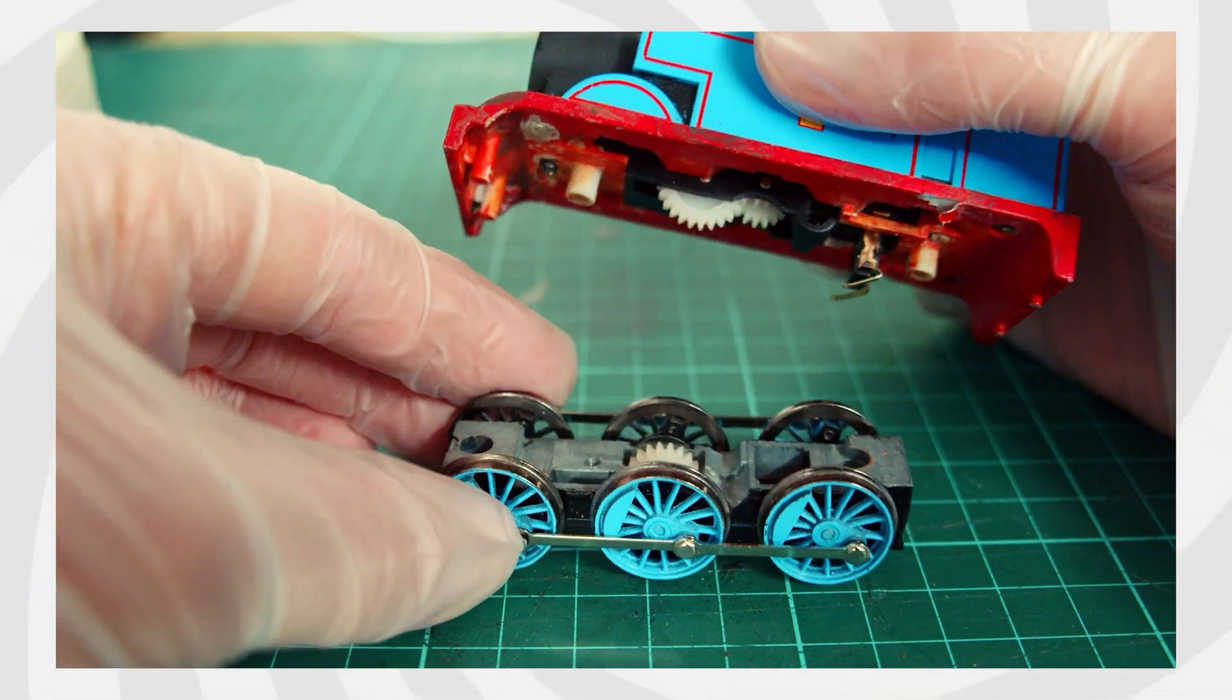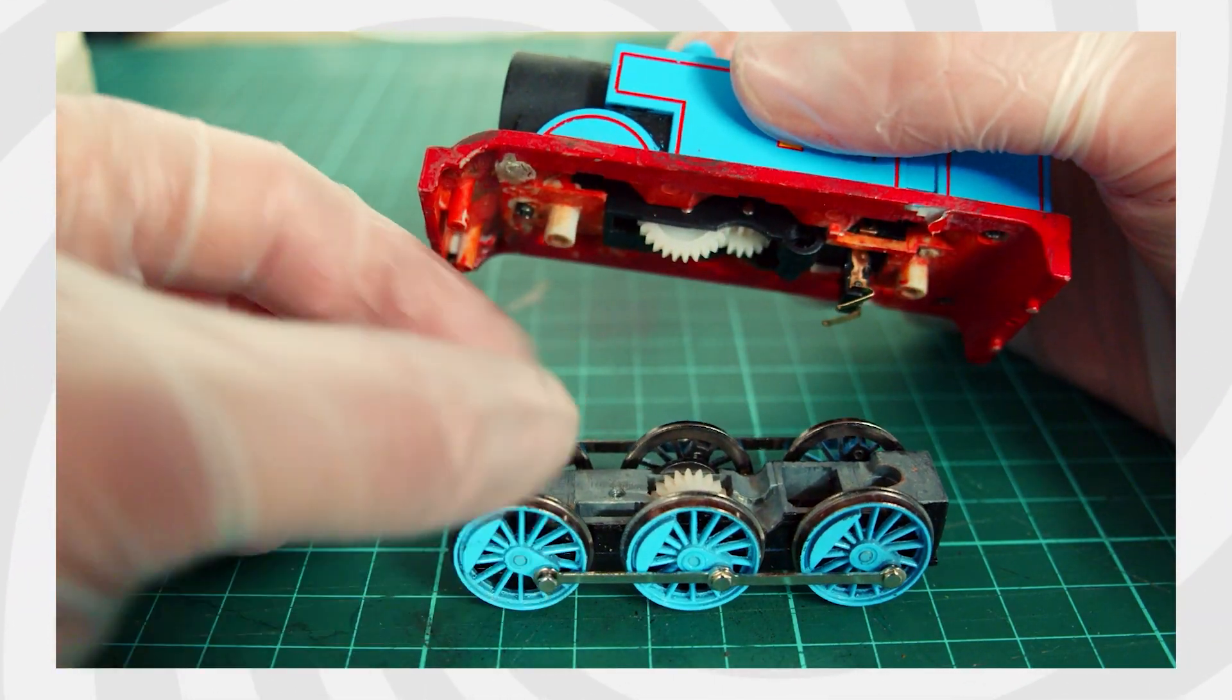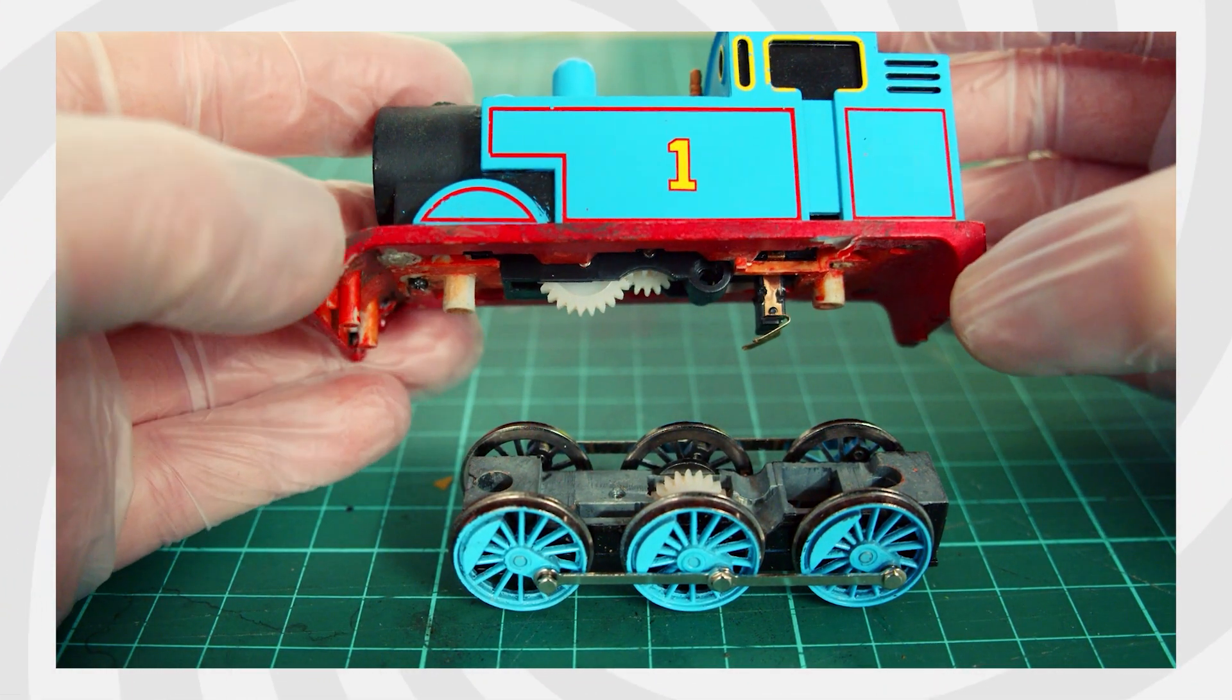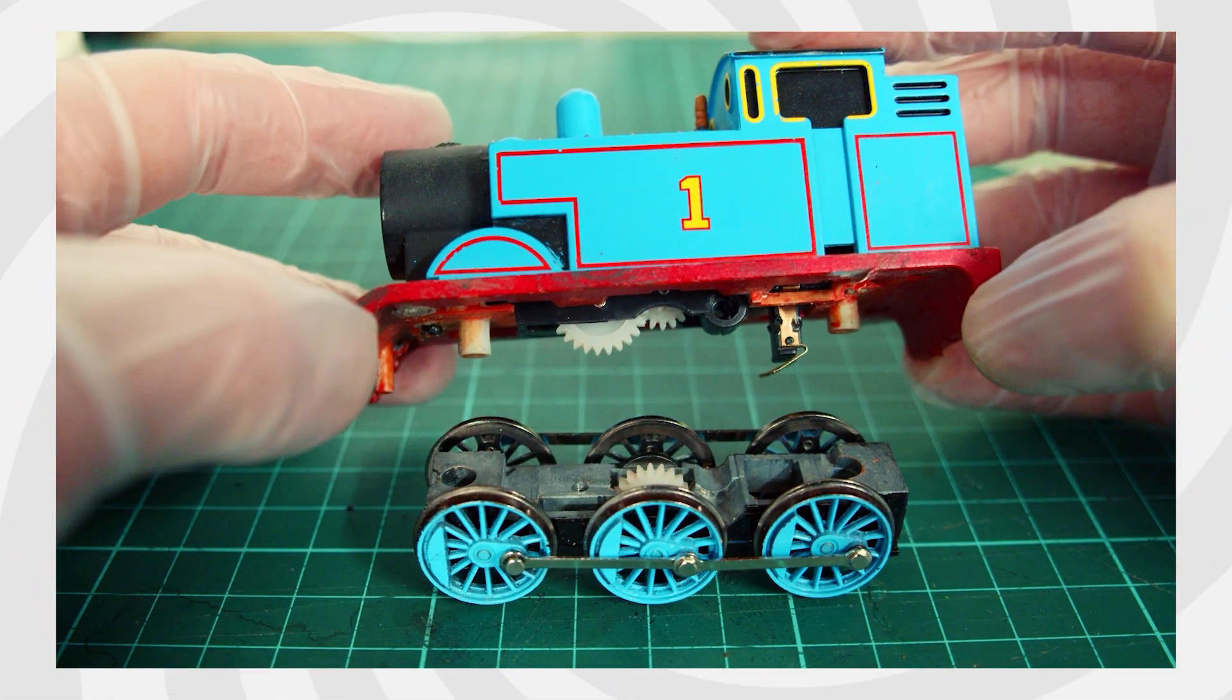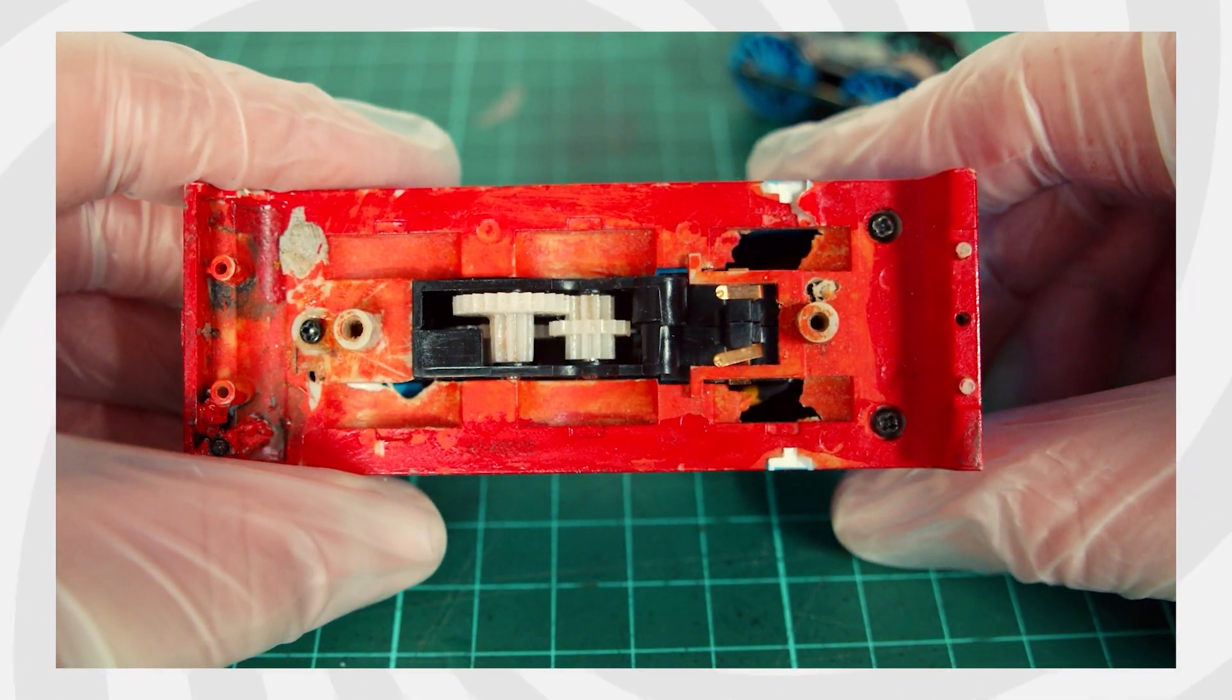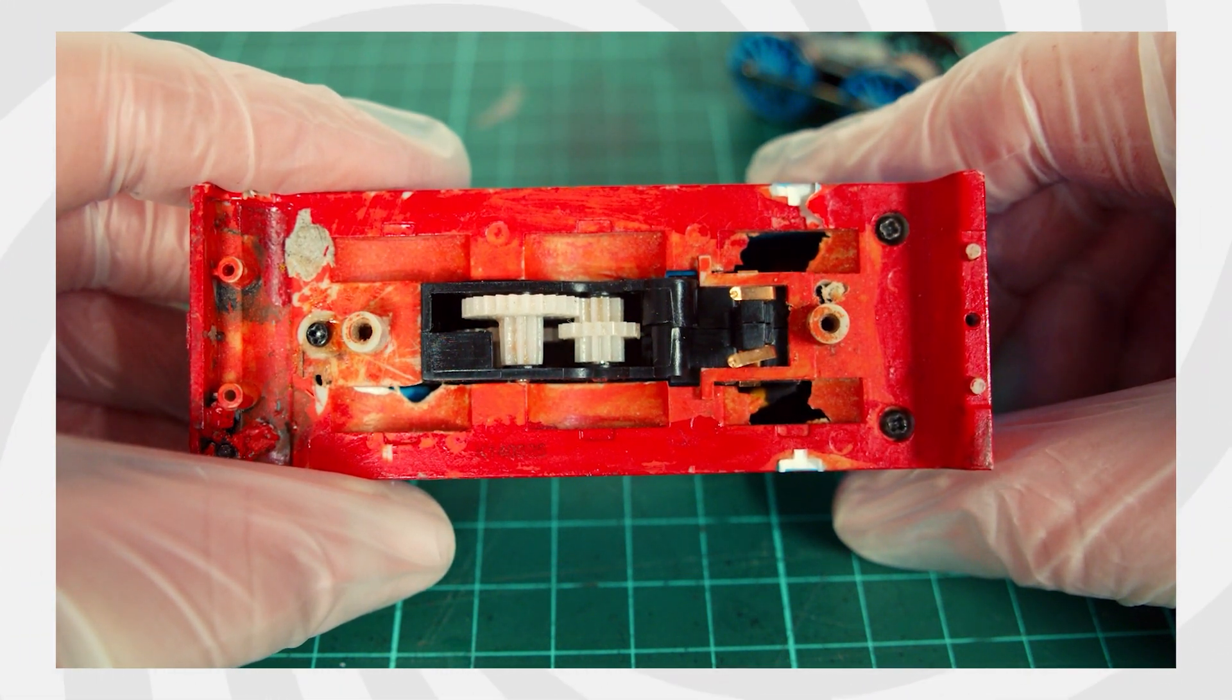Once those have been removed, the bottom of the chassis can be separated from the motor housing. This Bachmann Thomas is the newer version, which doesn't have the wires connected to the bottom of the chassis. If you have the older version, that doesn't matter. Just be careful not to pull on these wires, as they may break from the wheel pickups.